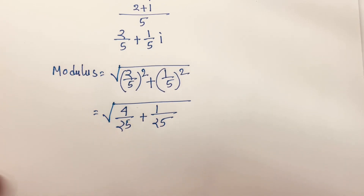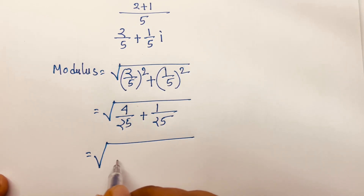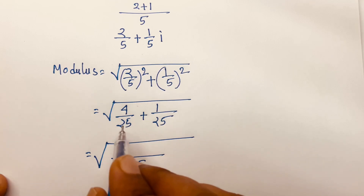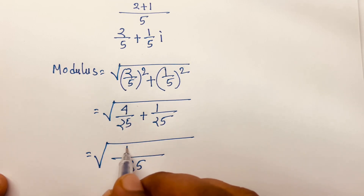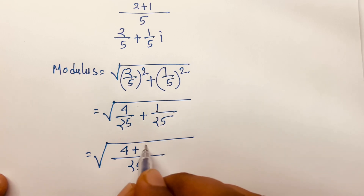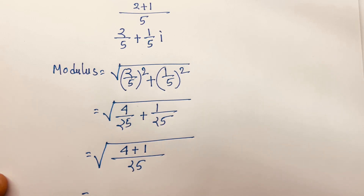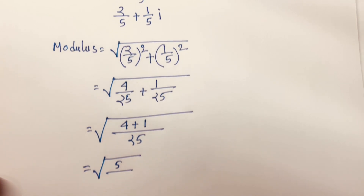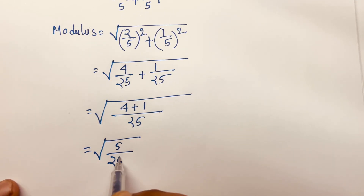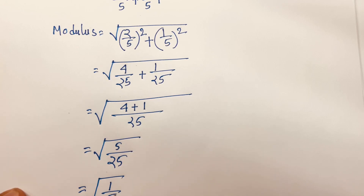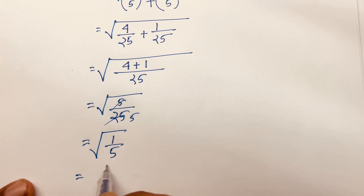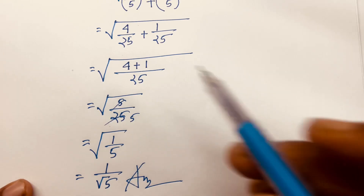The least common denominator is 25, so we get the square root of (4 plus 1) over 25, which is the square root of 5 over 25. This simplifies to the square root of 1 over 5, which equals 1 over square root 5. This is our final answer for the modulus.